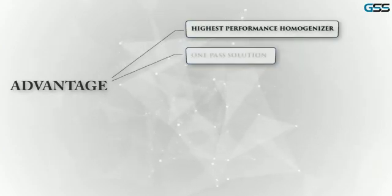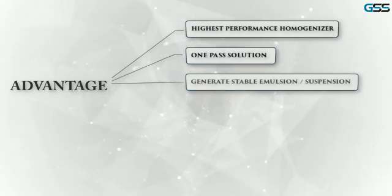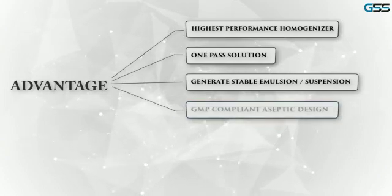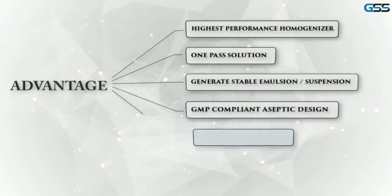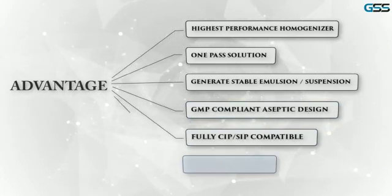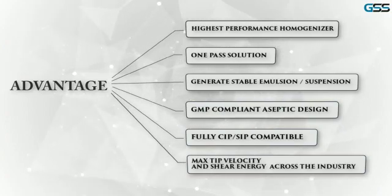Some of the advantages in the MS series are: highest performance homogenizer, one pass solution, generates stable emulsion or suspension, GMP compliant aseptic design, fully CIP or SIP compatible, maximum tip velocity and shear energy across the industry.